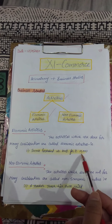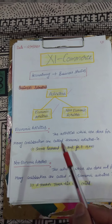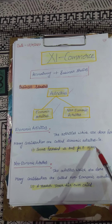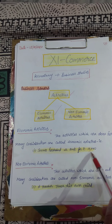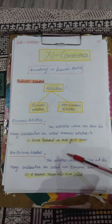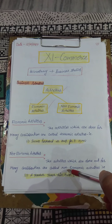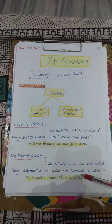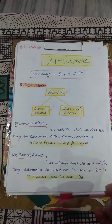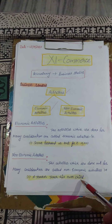The activities which are done for money consideration are called economic activities — jo activities money ke liye ki jaati hain, unko hum economic activity kehte hain. For example, Seema purchases a book for rupees 10,000. Here Seema is performing an activity involving a money consideration, so this activity is an economic activity.